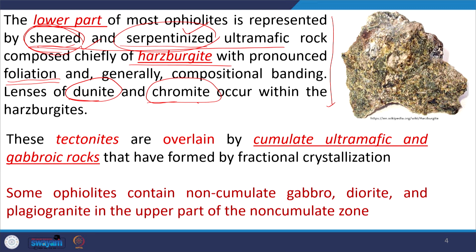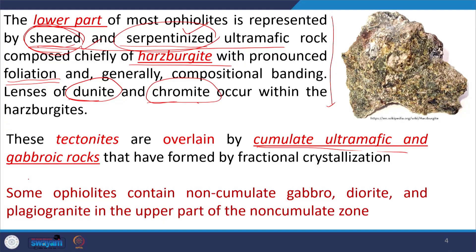These tectonites are overlain by cumulate ultramafic and gabbroic rocks that formed by fractional crystallization within a magma chamber. Once crystallization starts, olivines settle down, then pyroxenes, collectively forming cumulate ultramafics and gabbroic rocks. Some ophiolites contain non-cumulate gabbros, diorite, and plagiogranite in the upper part of the non-cumulate zone — so there are certain exceptions and not everywhere will there be typical cumulate layering.